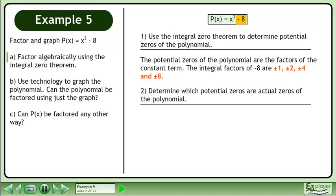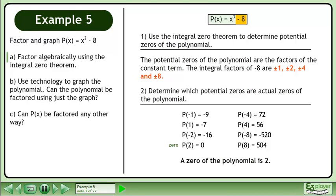Next, determine which potential zeros are actual zeros of the polynomial. The calculations for this step are shown. A zero of the polynomial is 2.